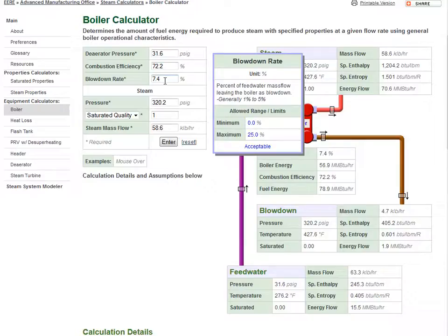The blow down rate is the percent of the feed water mass flow drained as a saturated liquid from the boiler to control and reduce the concentration of dissolved solids.